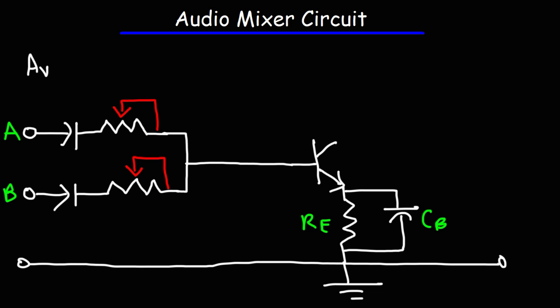The voltage gain is equal to the AC collector resistance divided by the AC emitter resistance plus the emitter resistor. But by adding the bypass capacitor, we can take this portion out of the equation, thus increasing the voltage gain of the entire circuit.